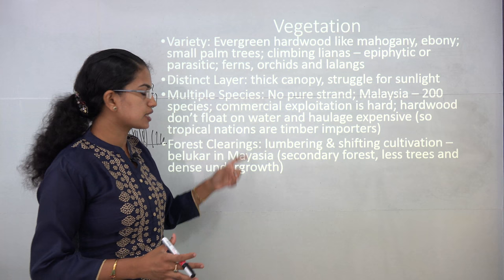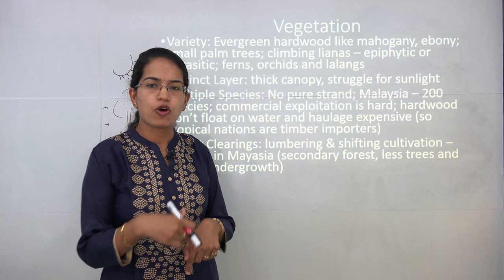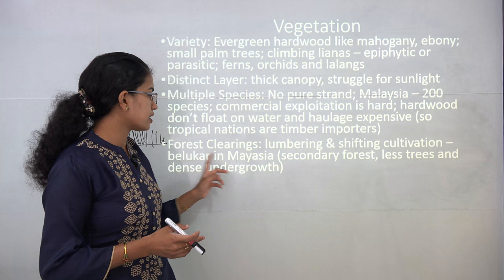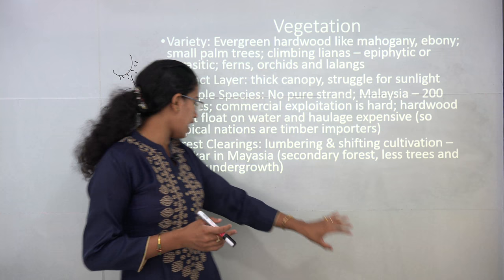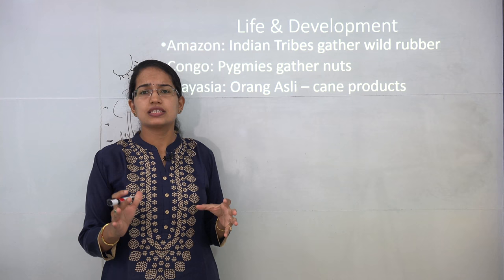With civilization, forests are cleared for lumbering and shifting cultivation, resulting in many secondary forests. A good example is belukar in Malaysia — secondary forests that have fewer trees but very dense undergrowth.